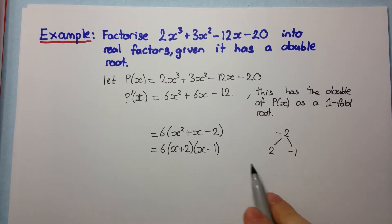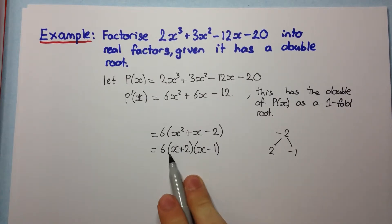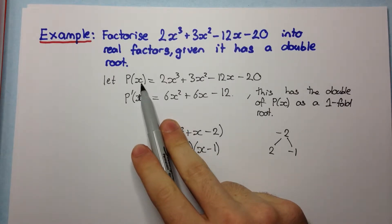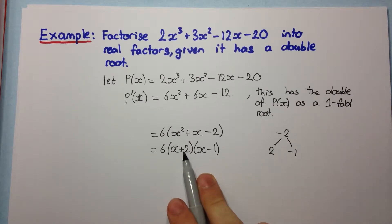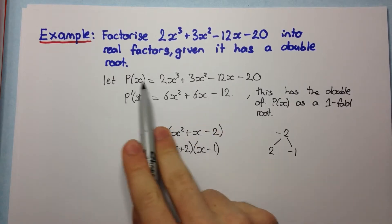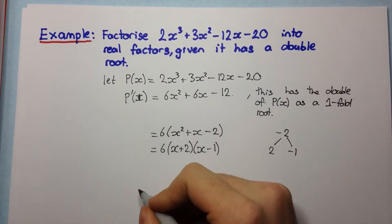So now we need to determine which of these factors is a double factor of P(x). The way we do this is we substitute in -2 or positive 1 into P(x) and see if it's a root of P(x).